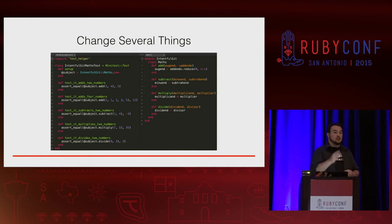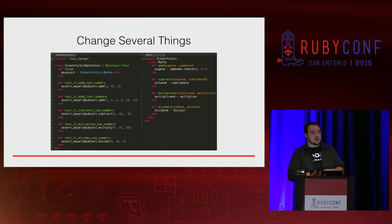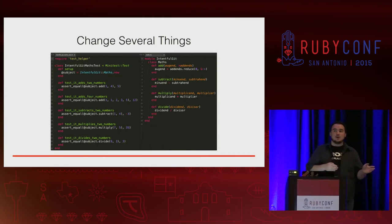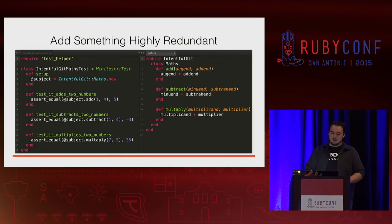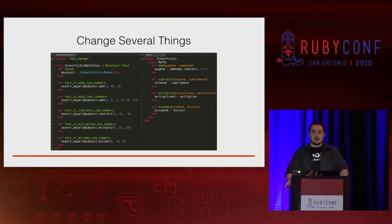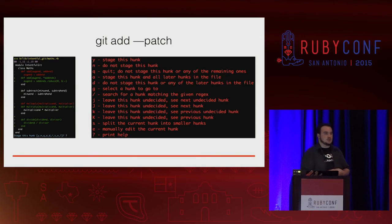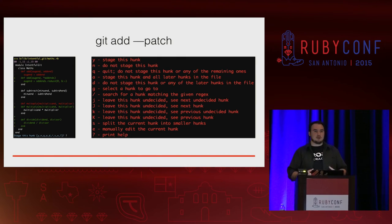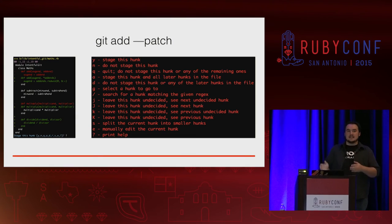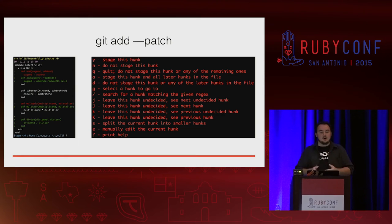Now we're going to change several things — in fact, three things. First, we're going to change it so we can add no matter how many parameters we pass in. Next, we're going to fix multiply — in the previous example I misspelled it, used an A instead of an I. Finally, we're going to add some division, which is horribly incomplete. Now we're going to go to the most important tool I want you to take away from today: adding in patches. What git add patch does is it solves the problem of having lots of changes — how do you add different chunks together without committing everything at once?